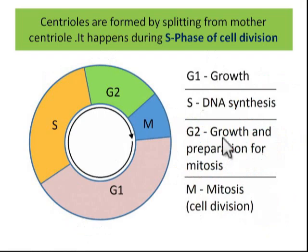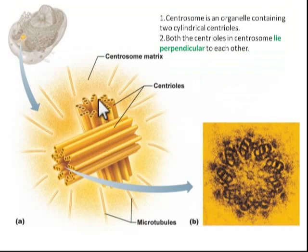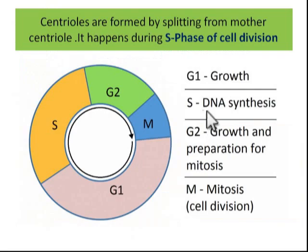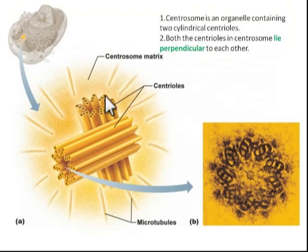Inside the centrosome, there are two centrioles - one mother centriole and one daughter centriole. The daughter centriole is formed from the mother centriole by a splitting process, similar to fission in bacteria but occurring during cell division in mitosis and meiosis.